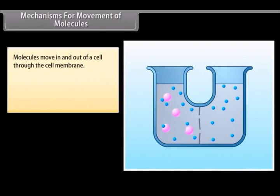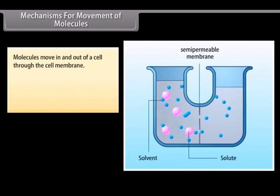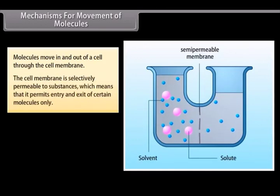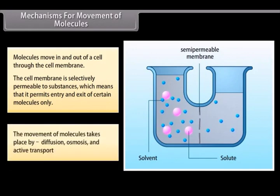Mechanisms for movement of molecules. Molecules move in and out of a cell through the cell membrane. The cell membrane is selectively permeable to substances, which means that it permits entry and exit of certain molecules only. The movement of molecules takes place by diffusion, osmosis and active transport.